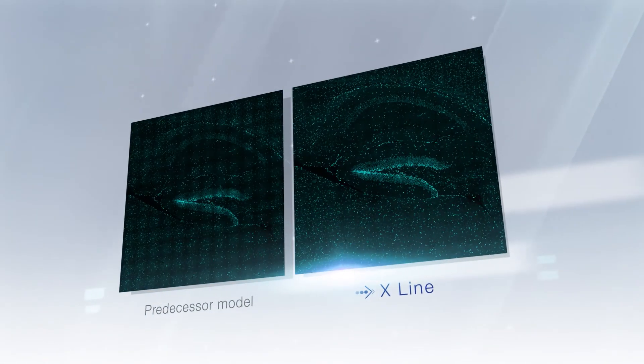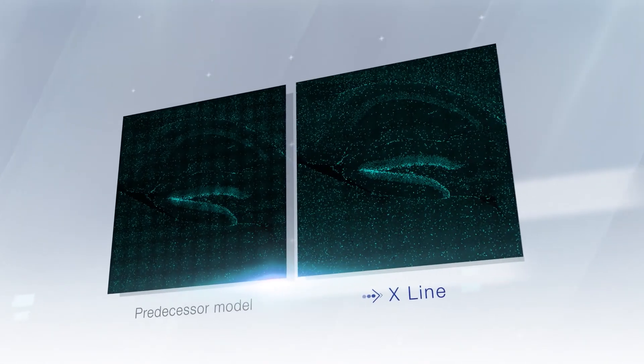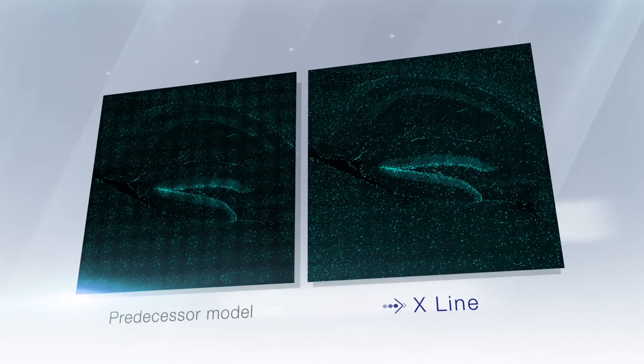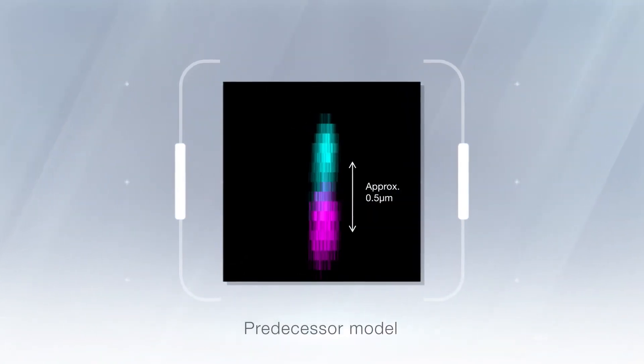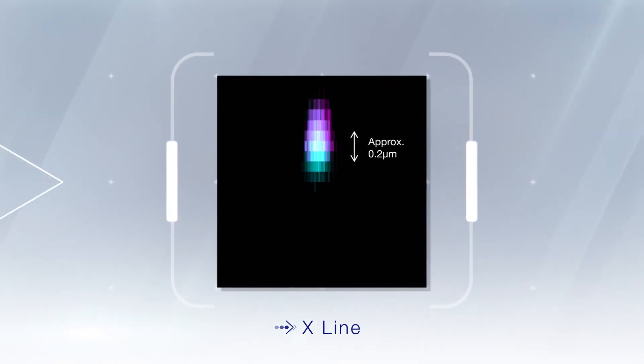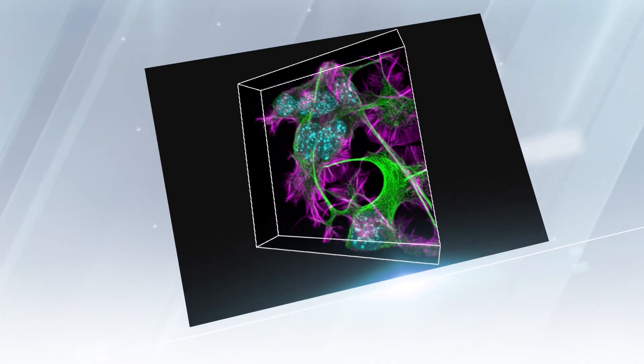X-Line objectives can generate seamless wide-area high-quality images due to the ability to capture wide-field-of-view images without deteriorations. X-Line objectives have extensive chromatic aberration correction from 400 nanometers to 1,000 nanometers, generating true multi-color images.